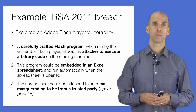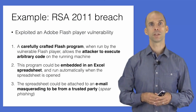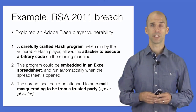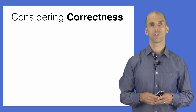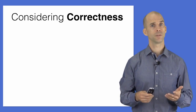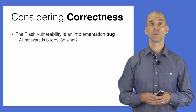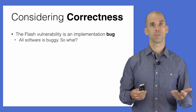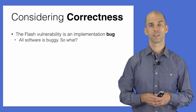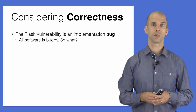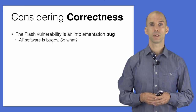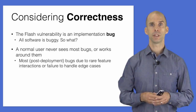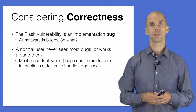Once the spreadsheet was opened, the attacker was able to silently install malware on the executive's machine and carry out the attack. This highlights an important distinction between correctness and security. From the point of view of correctness, the Flash vulnerability is just a bug, and all non-trivial software has bugs. Companies ship software with known bugs because it would be too expensive to fix them all; developers focus on bugs that arise in typical situations. The remaining bugs come up rarely and users work around them.